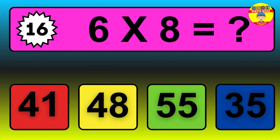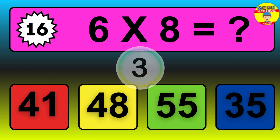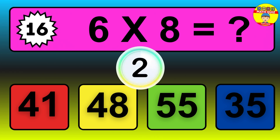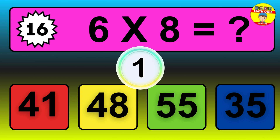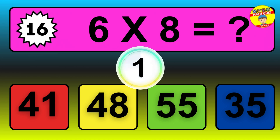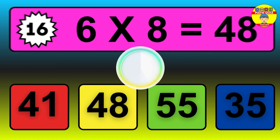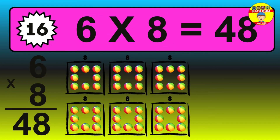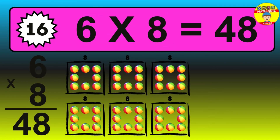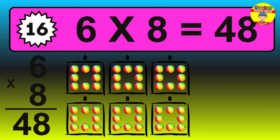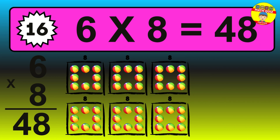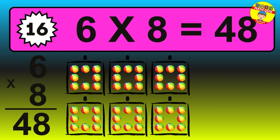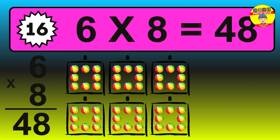Question 16. 6 times 8 equals what? The answer is 6 times 8 is 48. To calculate, we have 6 groups with 8 balls each one. So, how many balls do we have? 48 balls.